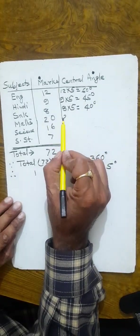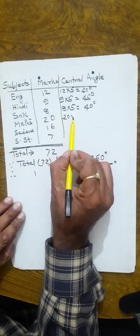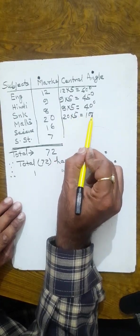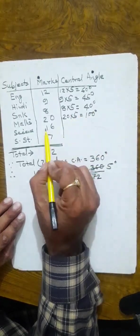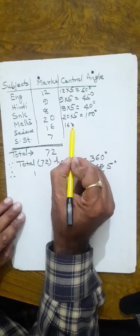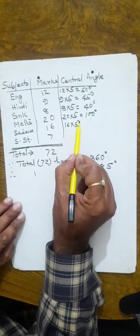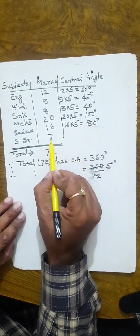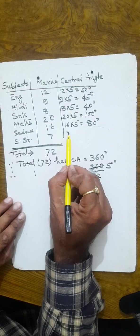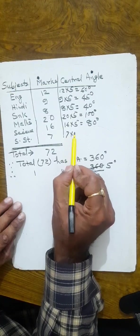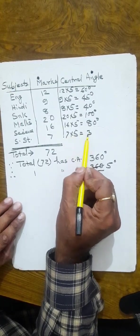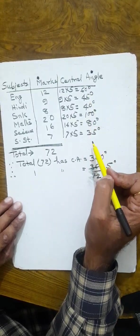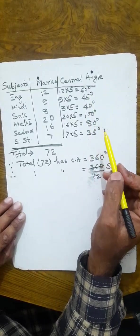Mathematics has 20 marks, so 20 into 5 equals 100 degrees. Science has 16 marks, so 16 into 5 equals 80 degrees. SST has 7 marks, so 7 into 5 equals 35 degrees. If we add all these central angles, we get 360 degrees.